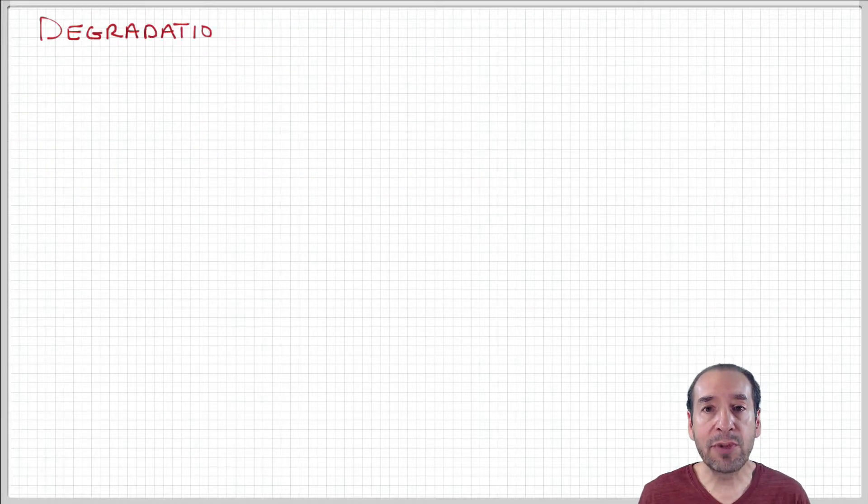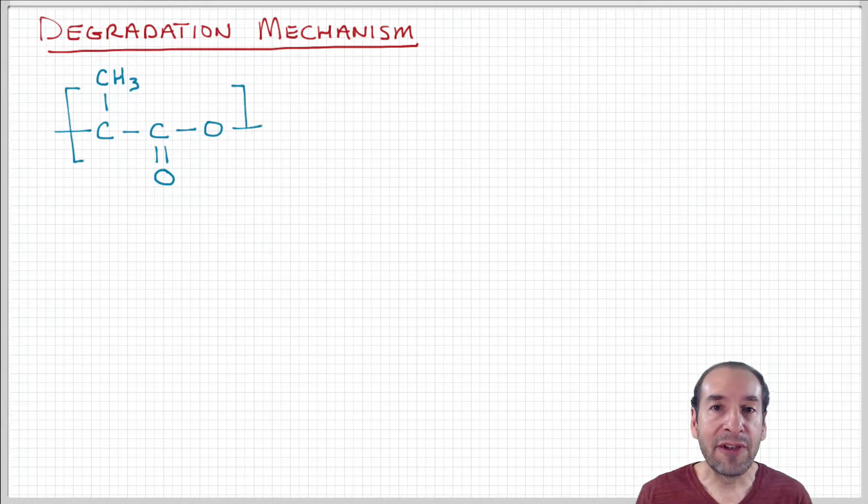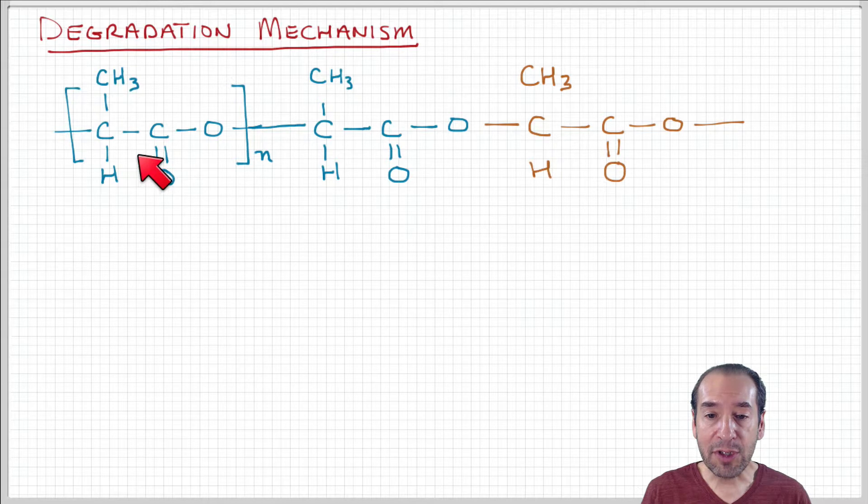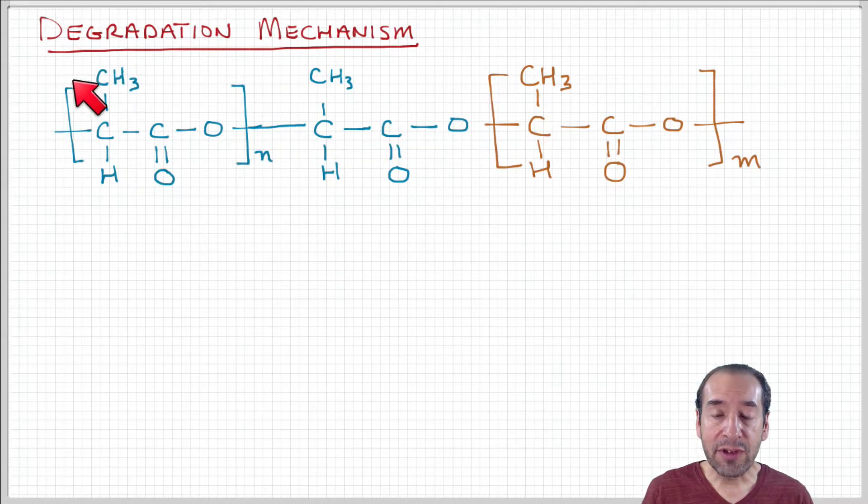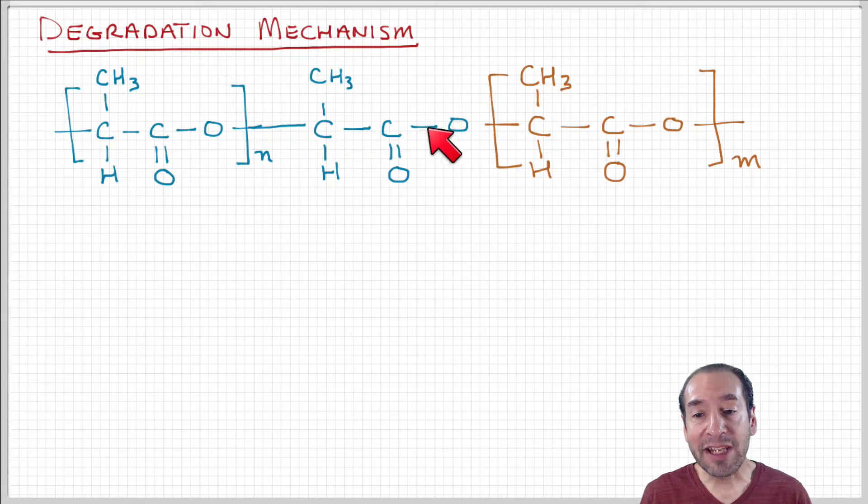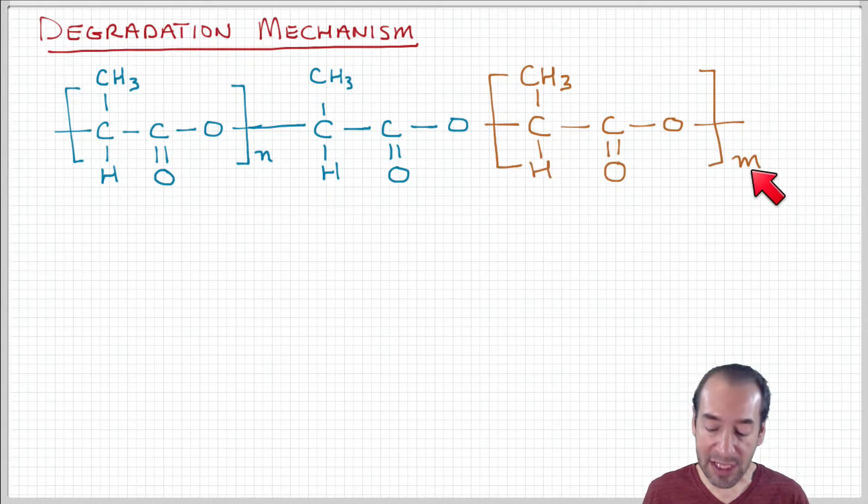I want to just review briefly the degradation mechanism for PLA because it's the first example of a material that we've seen like this. Here I'm drawing a polymer chain of PLA. I want to highlight three segments. This is the left-hand part of the chain that has N repeat units. Then I'm separating out one repeat unit here. To the right of this is more repeat units—the chain continues for M more repeat units.